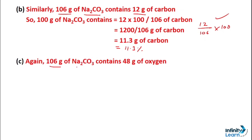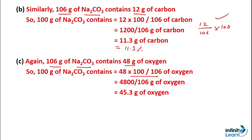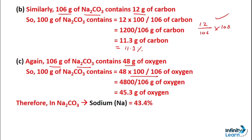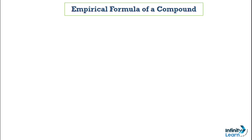And finally, talking about oxygen: 100 grams of sodium carbonate contains 48 grams of oxygen. For 100 grams of sodium carbonate: 48/106 × 100 gives us 45.3 grams of oxygen, which means 45.3%. So the percentage composition of sodium carbonate is: sodium 43.4%, carbon 11.3%, and oxygen 45.3%.